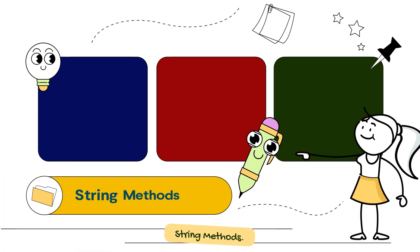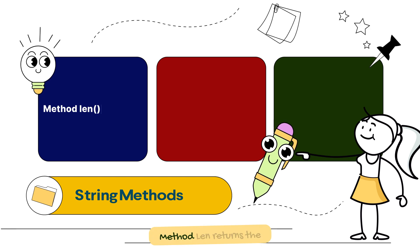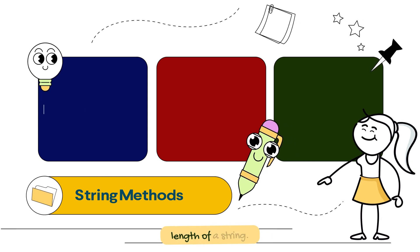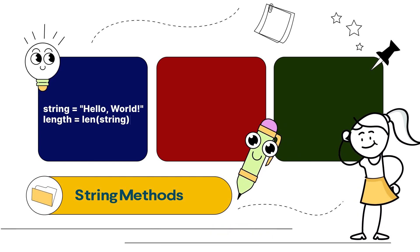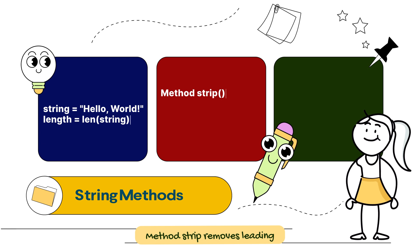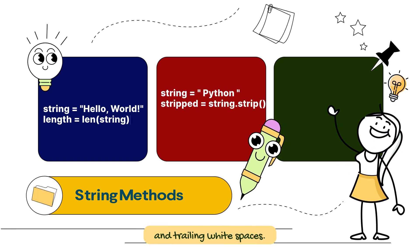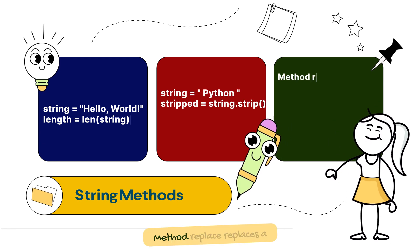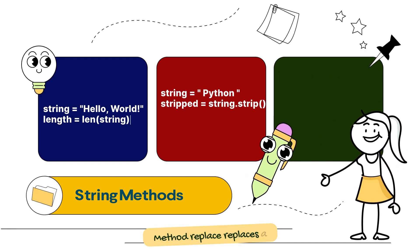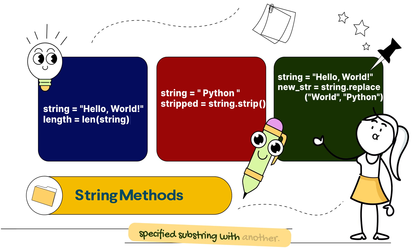String methods: the LEN method returns the length of a string. The STRIP method removes leading and trailing white spaces. The REPLACE method replaces a specified substring with another.